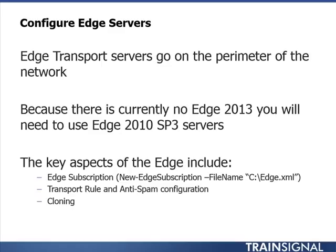You could install another edge transport server and make the exact same configuration changes — the same transport rules, the same anti-spam configuration. But that's not only a lot of repetitive work; there's a lot of room for error. One of the cool things about the edge transport service is that there are scripts you can run to clone it: export-EdgeConfig.ps1 and import-EdgeConfig.ps1. You use the first to clone the configuration, and the import script to apply the cloned configuration to the new server.